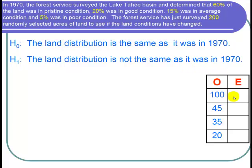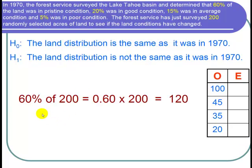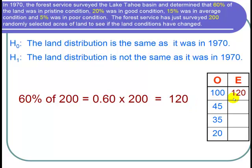Now let's find the expected counts. Notice that the sample size was 200. If we expected that 60% were in pristine condition, we can find the expected count by taking 60% of 200, or 0.6 times 200, which equals 120. So under expected count, I put in 120.